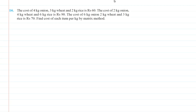Question 16 is a very easy question. We are given: the cost of 4 kg onion, 3 kg wheat, and 2 kg rice is ₹60; the cost of 2 kg onion, 4 kg wheat, and 6 kg rice is ₹90. We need to find the cost of each item per kg using the matrix method. There are three variables and three statements forming three equations, so we can easily solve it.